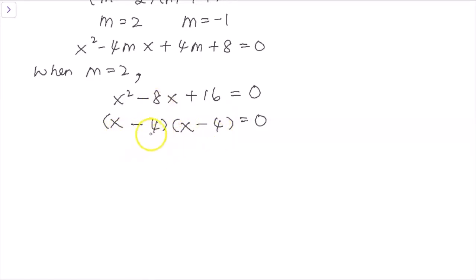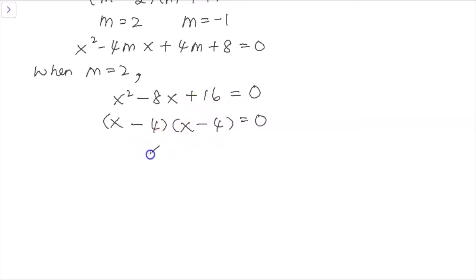Factorizing x² - 8x + 16 = 0 gives (x - 4)(x - 4) = 0. Expanding to verify: x² - 4x - 4x + 16 = x² - 8x + 16. Correct. So x = 4. This is an equal root, giving only one answer, which is correct.